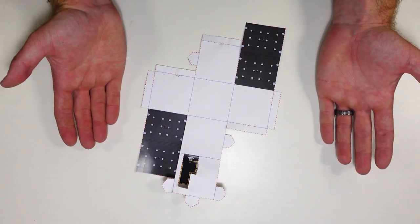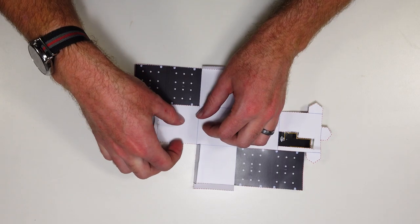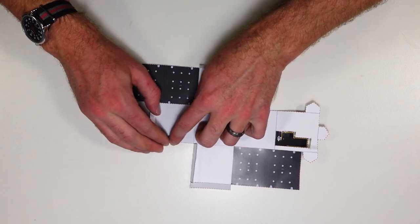So wherever we see a blue dotted line we're basically going to fold inwards and all of our folds go up towards us like this.